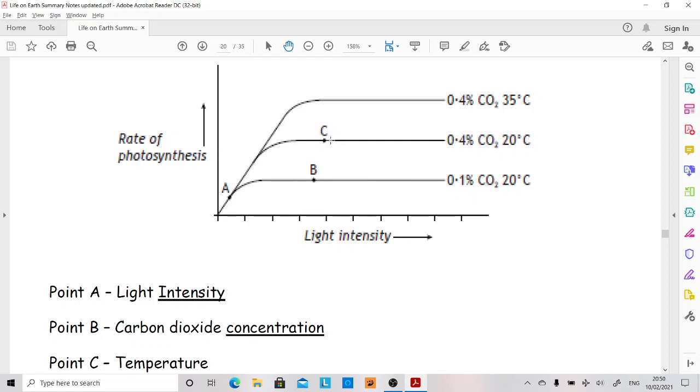If you want to know the limiting factor at C, we look at this one. Why is this better than this? It's not carbon dioxide concentration, they're the same, but the temperatures are different. This is a lower temperature, this is a higher temperature. So if we'd increased the temperature, photosynthesis would have been a better rate. Therefore, at C, the limiting factor is temperature.